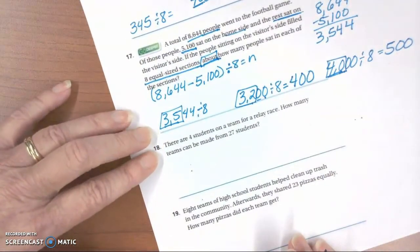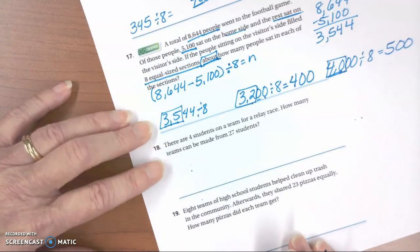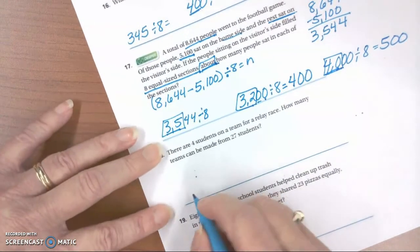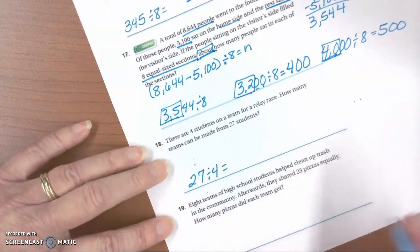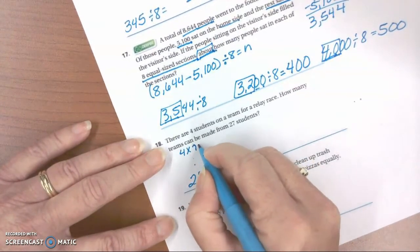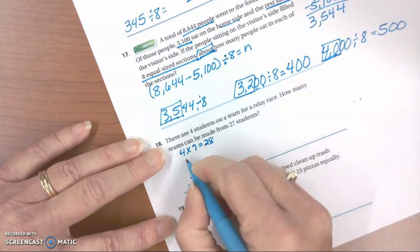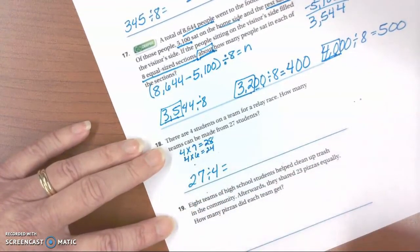The next one, there are 4 students on a team for a relay race. How many teams can be made from 27 students? So we're looking at 27 divided by 4. And if you know your basic facts, you know that 4 times 7 is 28, and 4 times 6 is 24. So those are the two we're looking for.